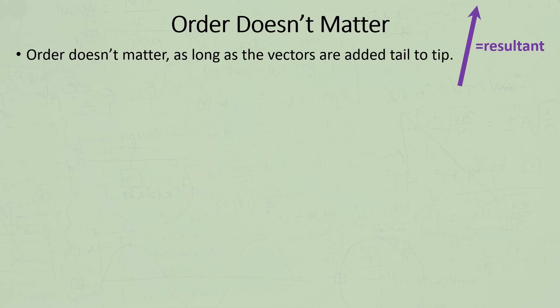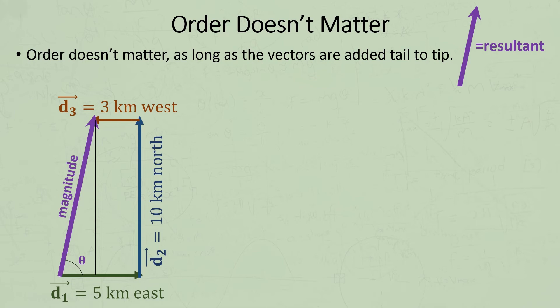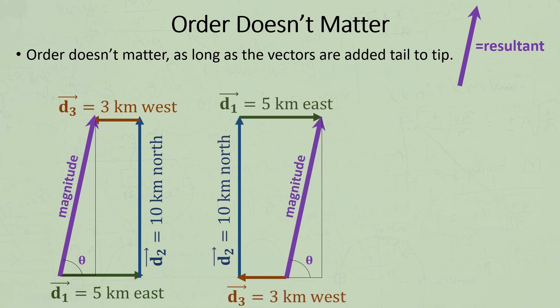How did I know to join them in that order? Well, actually it doesn't matter, as long as we join them tail to tip. Here they are in another order, but the resultant vector, that's the sum of the vectors, or the answer, has the same magnitude in the same direction.